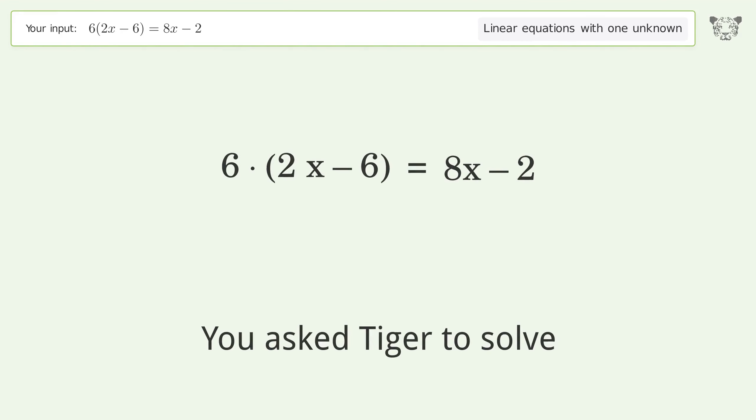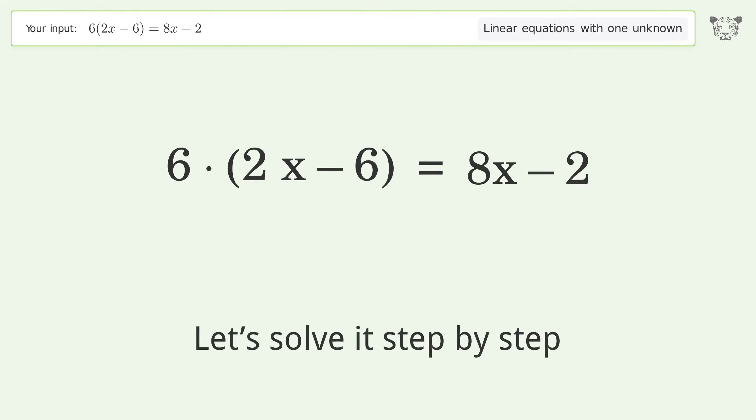You asked Tiger to solve this problem dealing with linear equations with one unknown. The final result is x equals 17 over 2. Let's solve it step by step. Simplify the expression by expanding the parentheses.